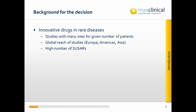To get the required number of patients, the global reach of the studies was very large. We had sites in almost all continents — Asia, Europe, all the Americas, and in countries that were not so easy to manage, like Vietnam and various South American countries. We also had a relatively high number of SUSARs since the drugs were innovative and the safety profile was not well known beforehand.